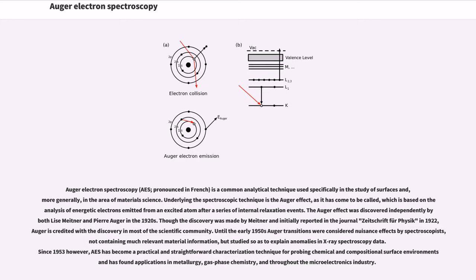The Auger effect was discovered independently by Lise Meitner and Pierre Auger in the 1920s. Though the discovery was made by Meitner and initially reported in the journal Zeitschrift für Physik in 1922, Auger is credited with the discovery in most of the scientific community.